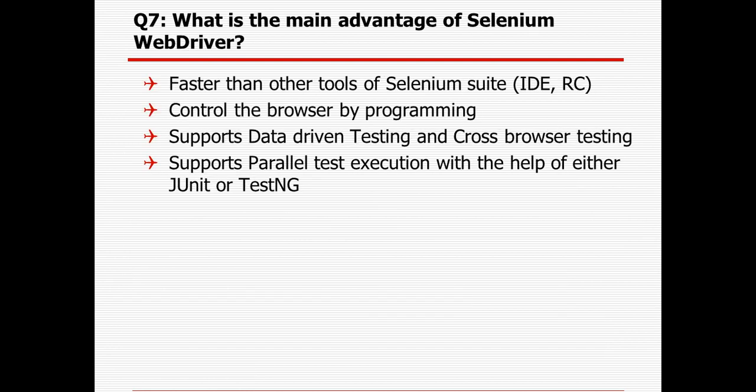What is the main advantage of Selenium WebDriver? First, it is much faster than other Selenium suites like IDE or RC. It controls the browser by programming language. It supports data-driven testing and cross-browser testing — we can take data from Excel or CSV files and run the same test case in multiple browsers. It supports parallel test execution with the help of either JUnit or TestNG. If we implement TestNG framework in Selenium WebDriver, we can run test cases from different OS and different browsers at the same time.